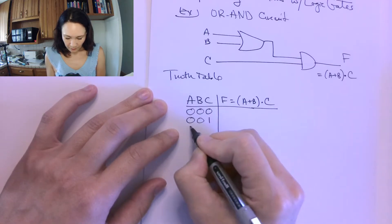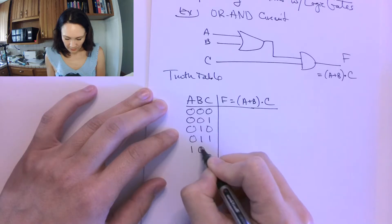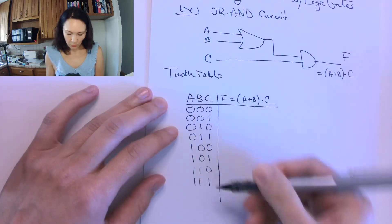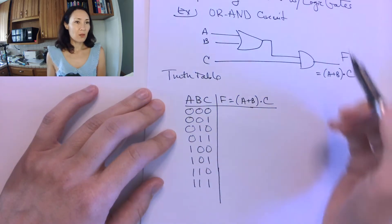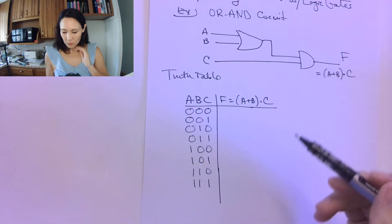So it's going to start at 000, 001, 010, 011, 100, 101, 110, and 111. We have eight cases that we have to evaluate for our circuit. So we can go through step by step.